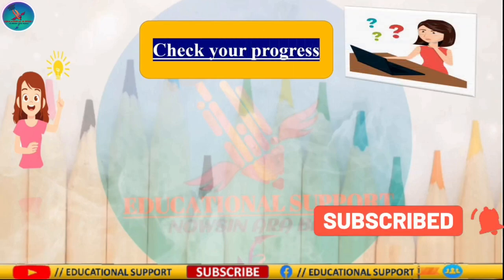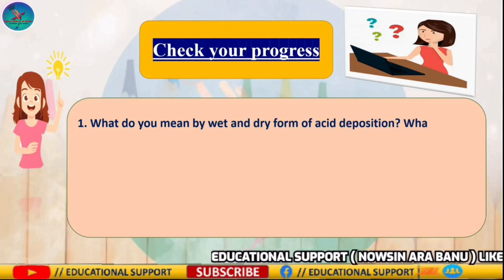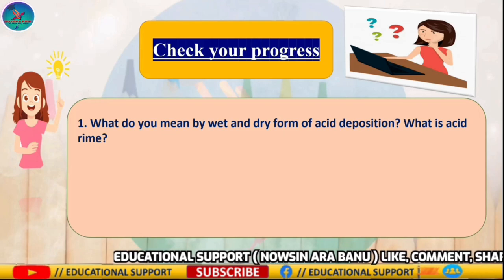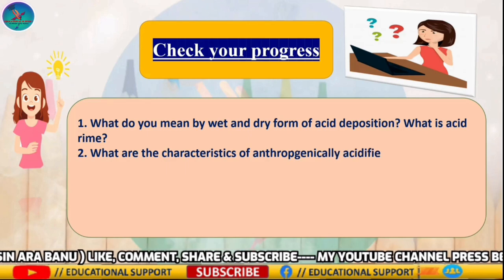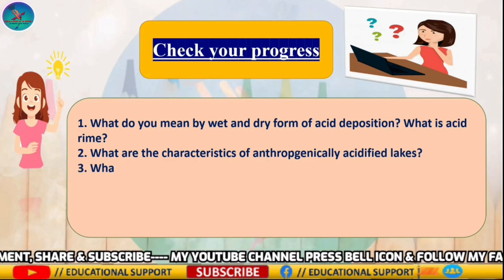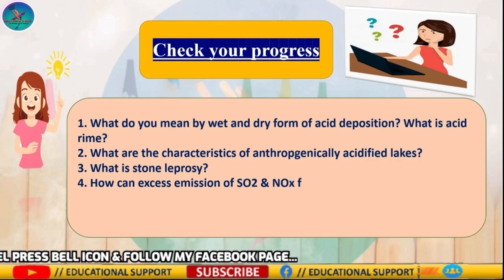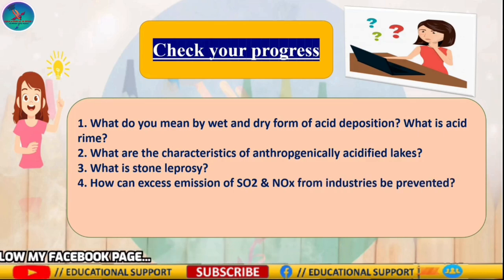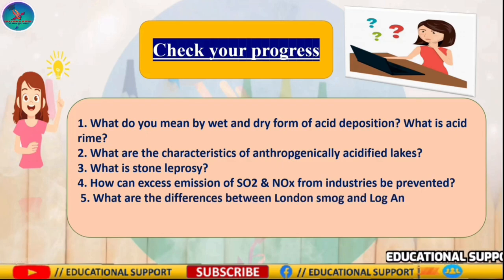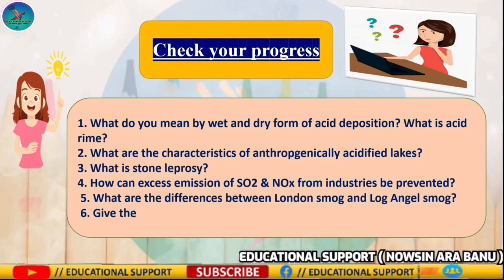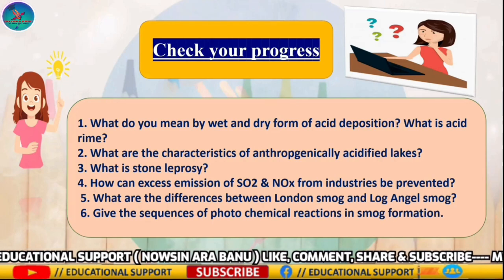Check your progress. Number one: What do you mean by wet and dry forms of acid deposition? What is acid rime? Number two: What are the characteristics of anthropogenically acidified lakes? Number three: What is stone leprosy? Number four: How can excess emissions of SOx and NOx from industries be prevented? Number five: What are the differences between London smog and Los Angeles smog? Number six: Give the sequence of photochemical reactions in smog formation.